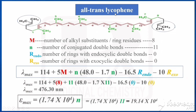Now we will calculate for all-trans-lycopene. From the structure, M is the number of alkyl substituents plus ring residues. There are 6 alkyl substituents and 2 ring residues, giving M = 8. All-trans-lycopene also has 11 conjugated double bonds, so n = 11.